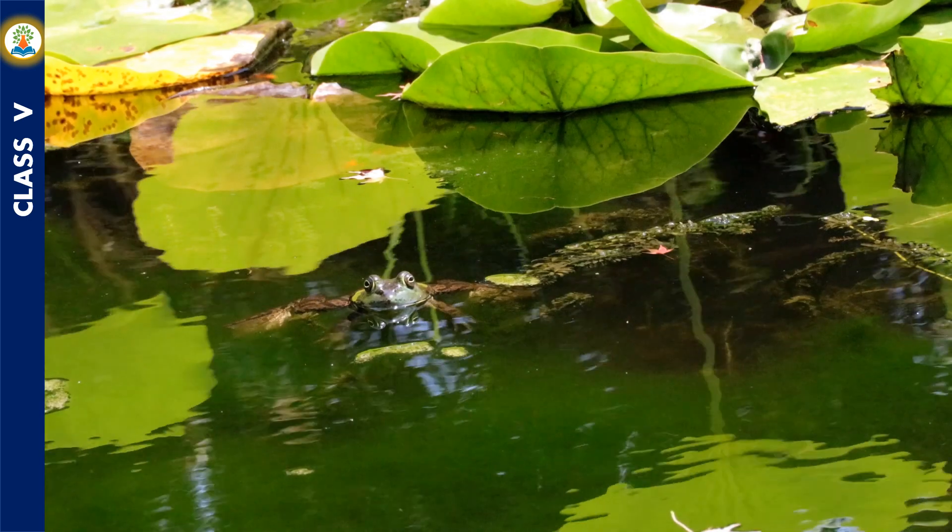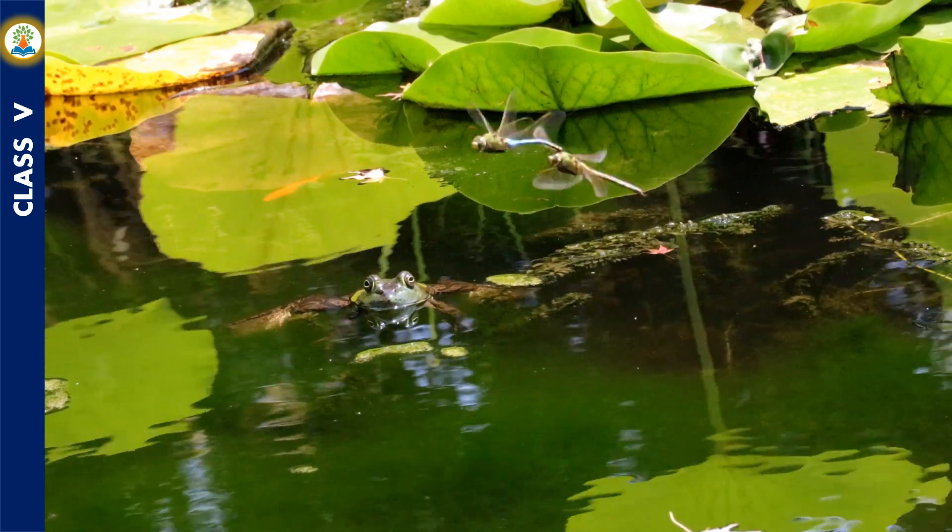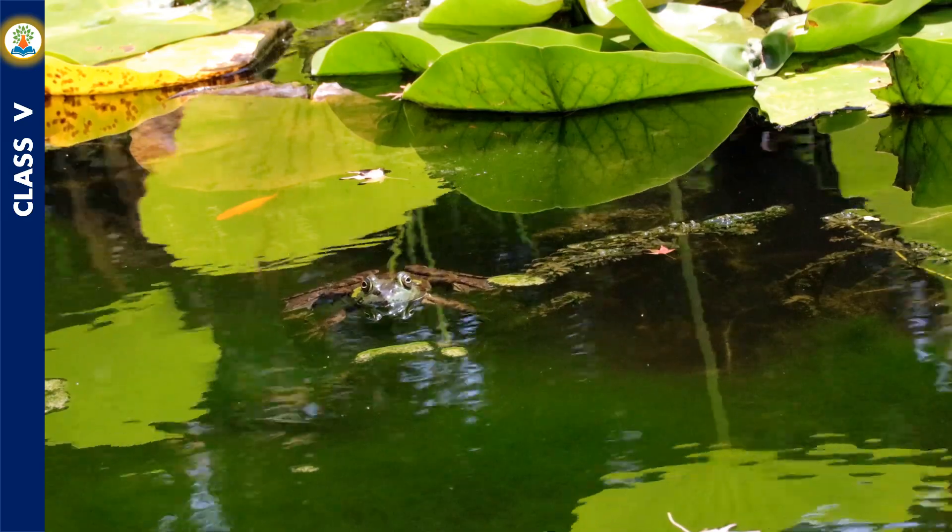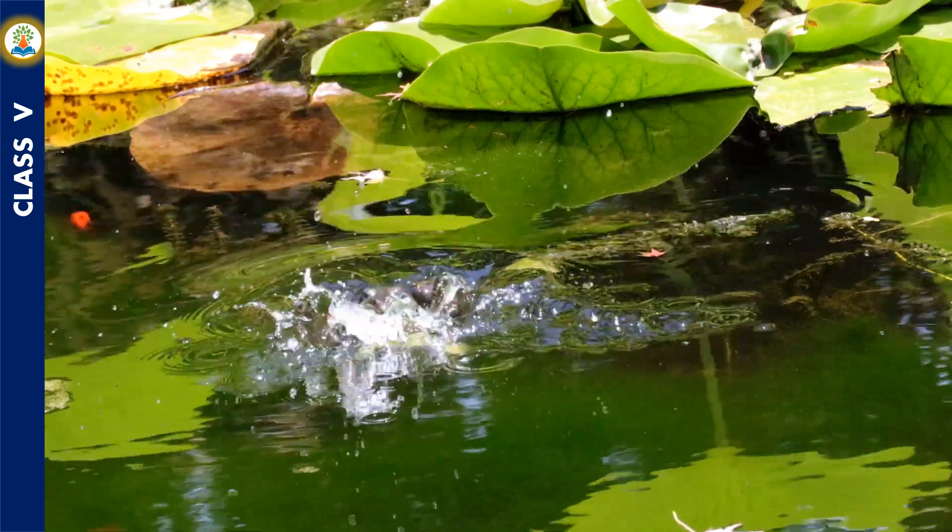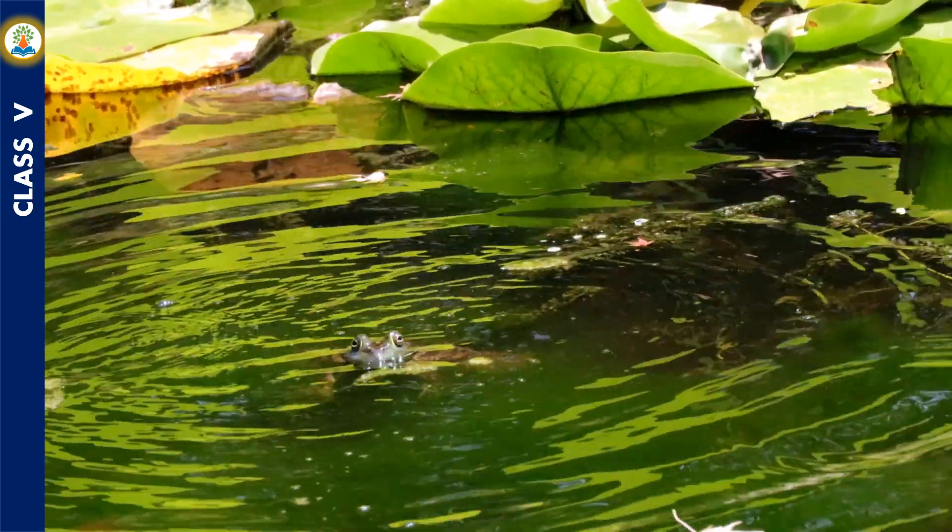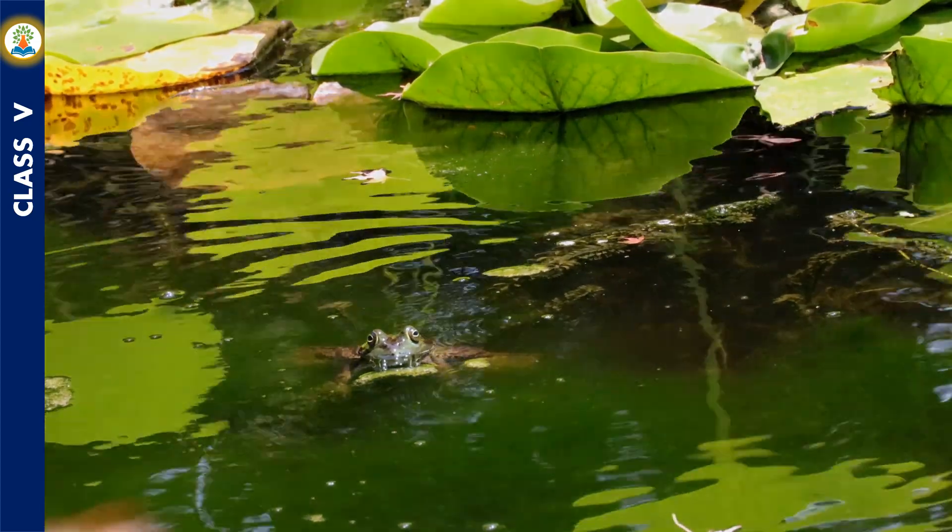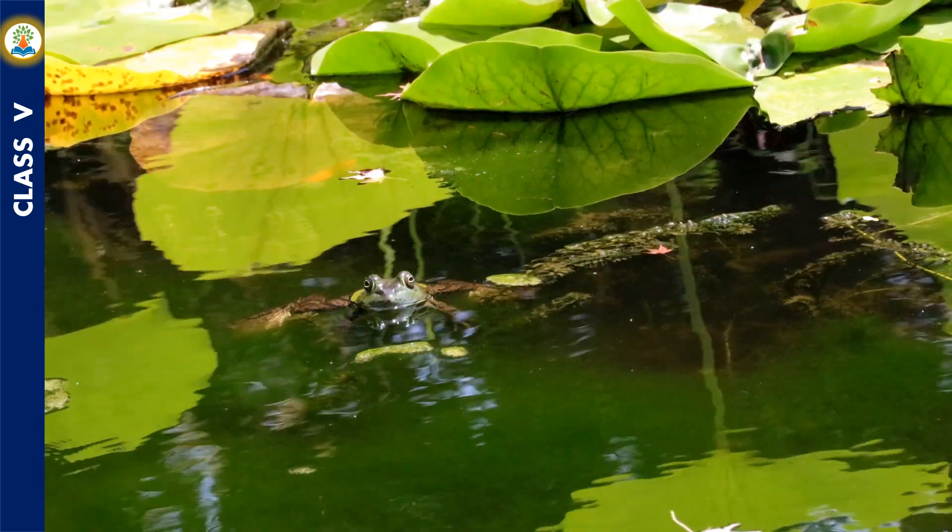An ecosystem may be small as a little pond or a burrow, or as vast as the ocean or a forest. For example, a little green patch with grass will have other small plants, insects, worms, soil, water, and sunlight.